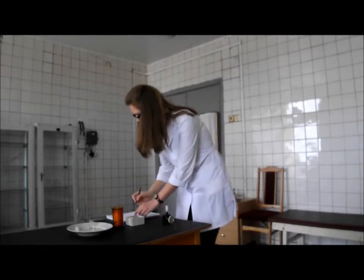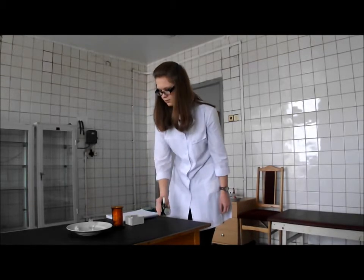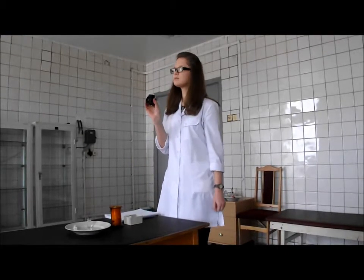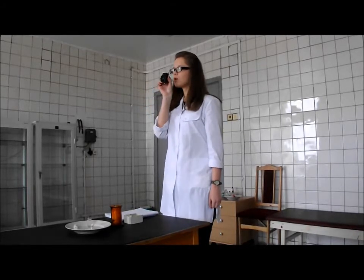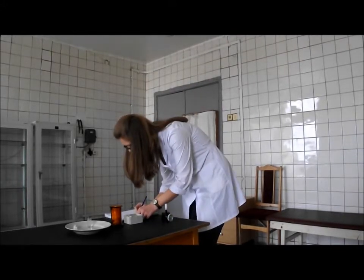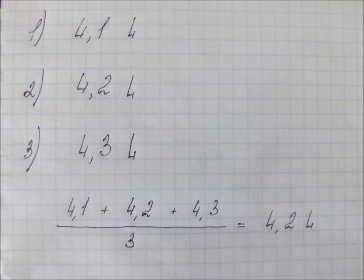Its duration should be 4–8 seconds. Define the volume of vital capacity by the scale of the spirometer, then put it back to the zero position. Repeat the measurements 3 times and find the average value. Our results are: first 4.1 liters, second 4.2 liters, and third 4.3 liters. The average result is 4.2 liters.